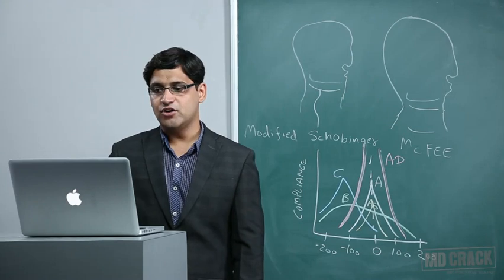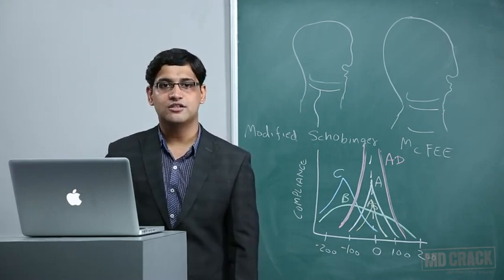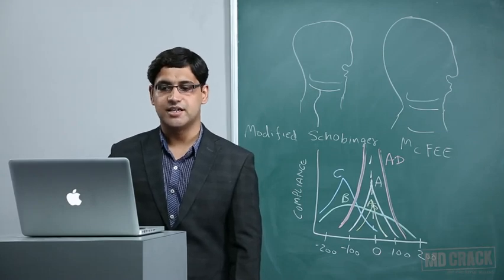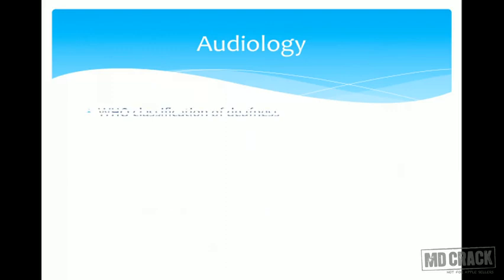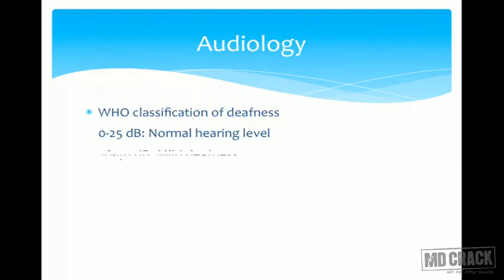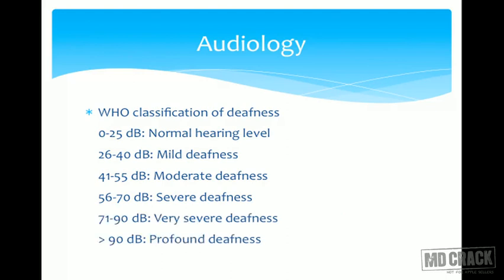Red color is used for the right ear and blue color is used for the left ear on the audiogram — this can be asked as an MCQ. Sounds used for masking include white noise, narrow band noise, and complex noise. Of these, narrow band noise is the most effective for masking.